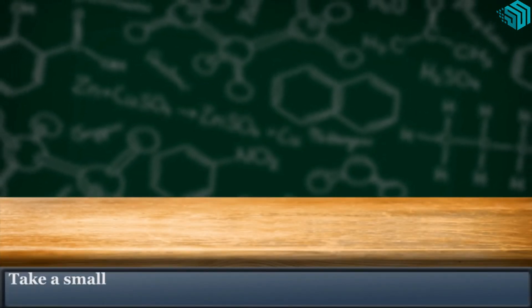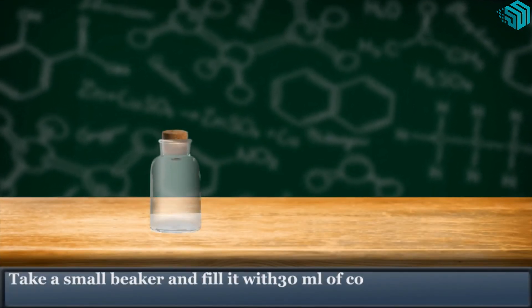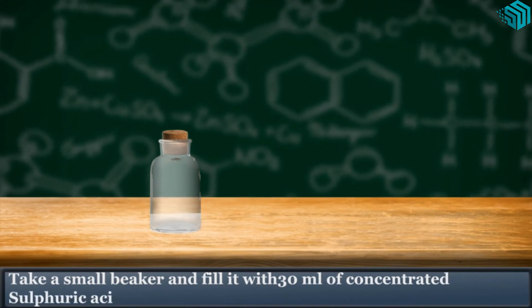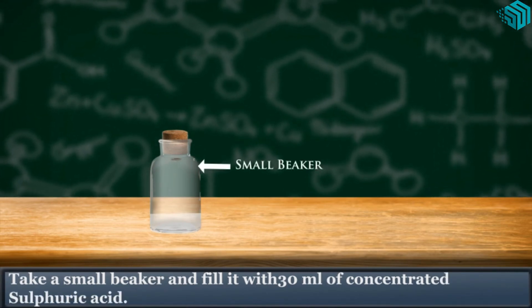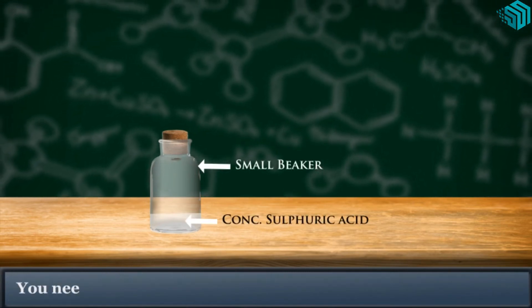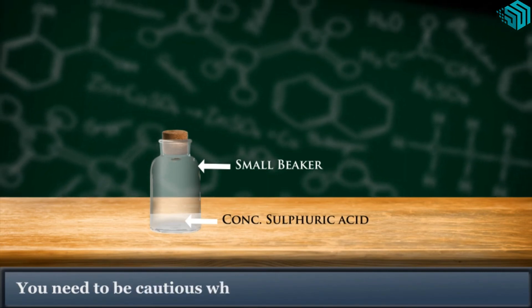Take a small beaker and fill it with 30 milliliters of concentrated sulfuric acid. You need to be cautious while handling acids.